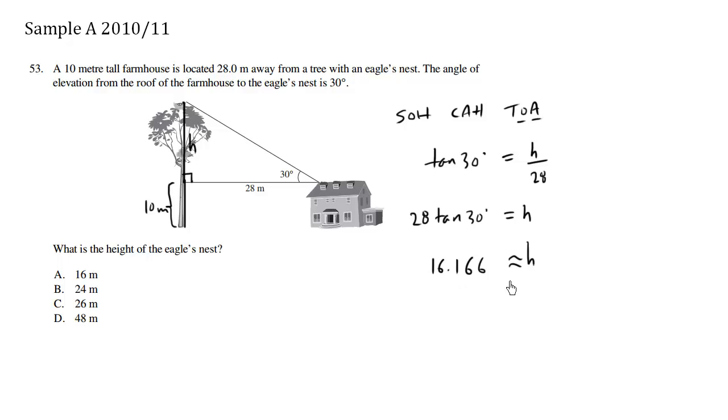We're talking about meters. So to find the actual height of the eagle's nest, we're going to add h to 10 meters. So the final answer should be 16 plus 10 which is 26. 26 meters. Choice C is the correct answer.